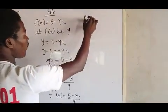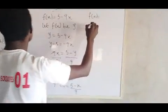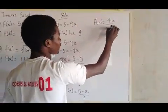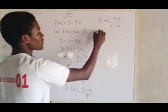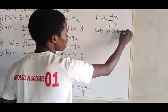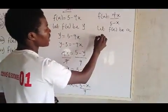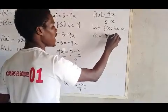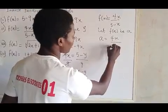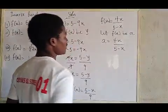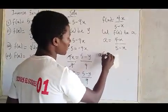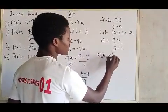The second example: we have F of X equals four X over five minus X. The same approach — let F of X equal Y. Then cross-multiplying by five minus X, you have Y times five minus X equals four X, giving you five Y minus YX equals four X.